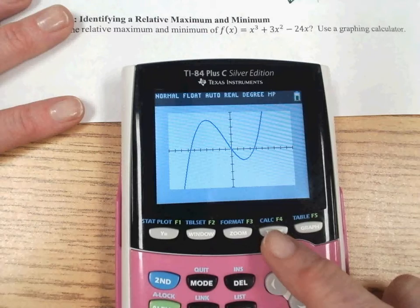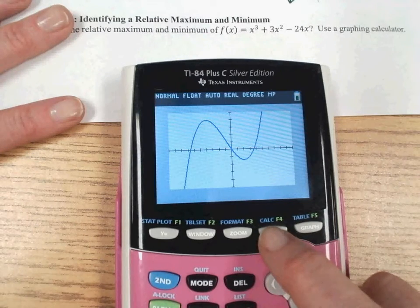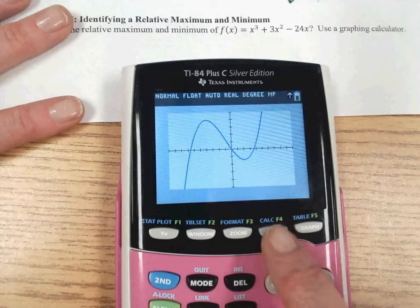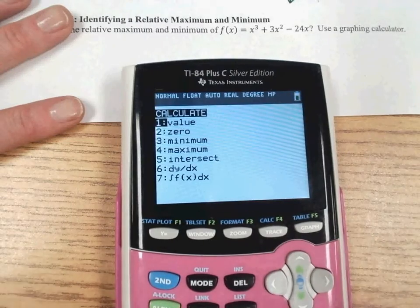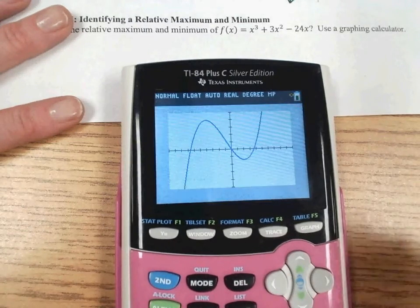We actually have a nice option here, a nice feature, the Calc button, the Calculate. So you have to press 2nd, and then the Trace key will get you to Calculate. And you can click on Maximum.